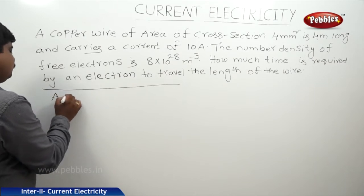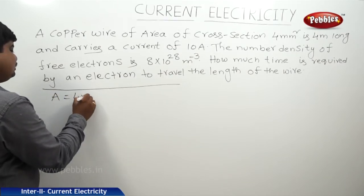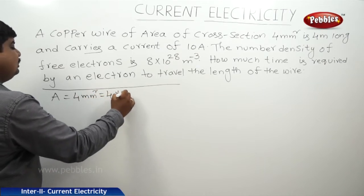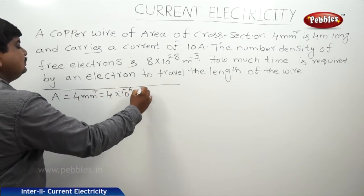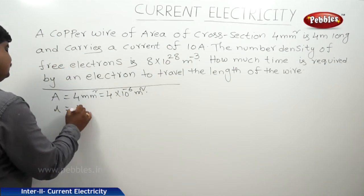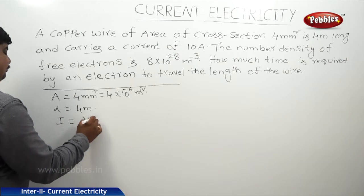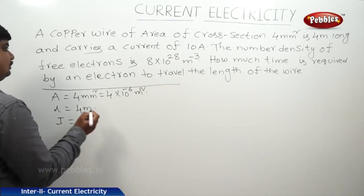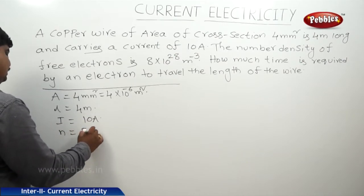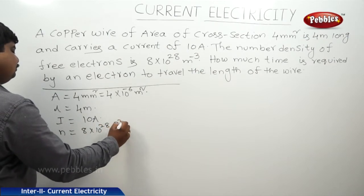The area of the copper wire is 4 millimeter square, which is 4 into 10 to the power of minus 6 meter square. The length of the wire is 4 meters, the current I is 10 amperes, and the number density n is 8 into 10 to the power of 28 per meter cube.